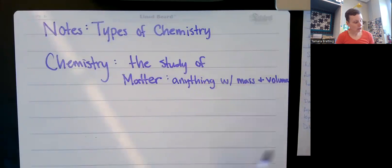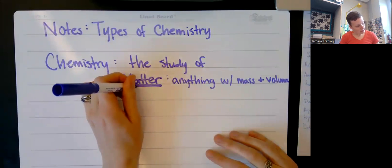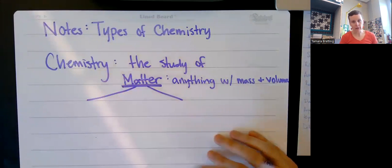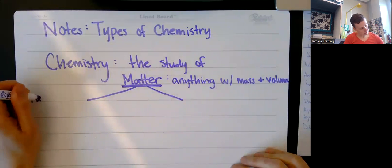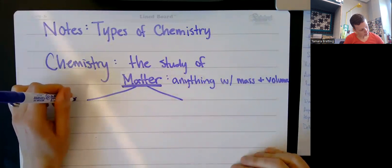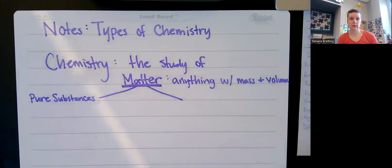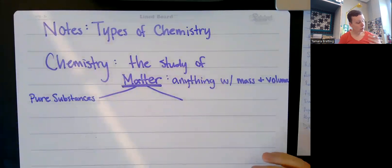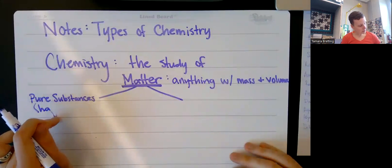Way back when we did our first unit — I think it might've been our second unit — we did a flow chart with matter. So I'm going to underline matter and split it into two categories. On this side, we had pure substances. One of the ways that we remember what a pure substance is, is that it has a chemical symbol or formula.